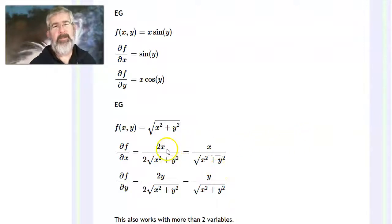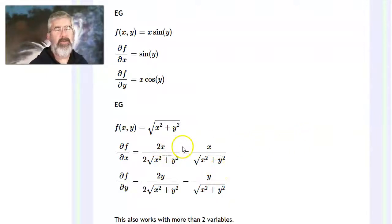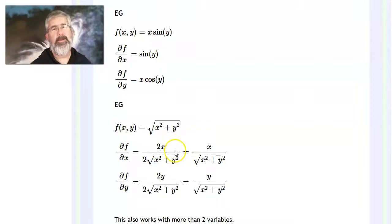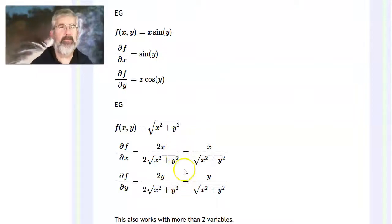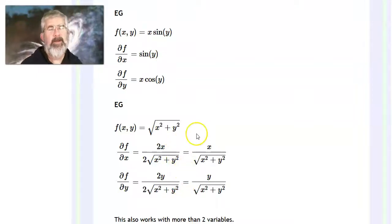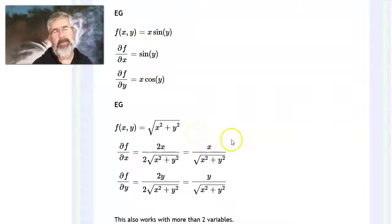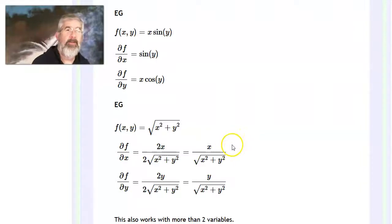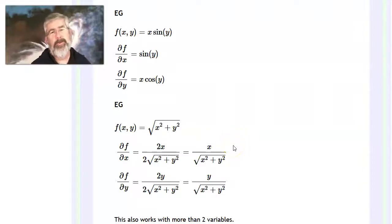You can have really big, crazy-looking functions and think you'll need product rules, quotient rules, chain rules, and so on — when it turns out most of it might just be a constant because it involves variables other than the one you need the derivative with respect to.